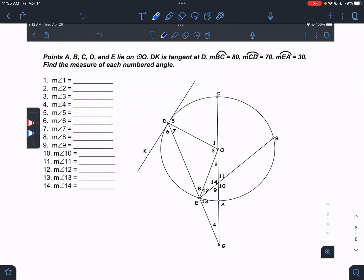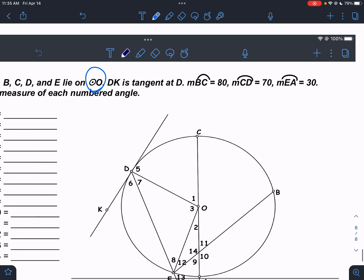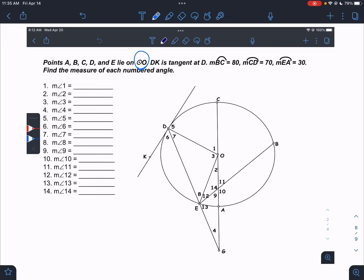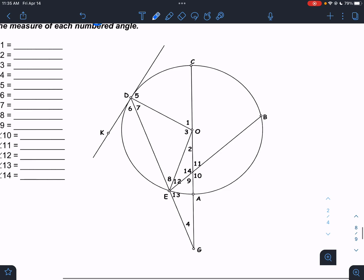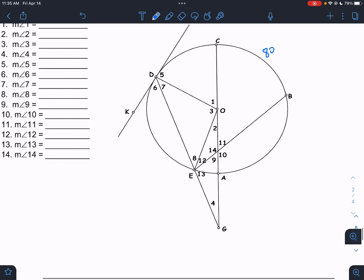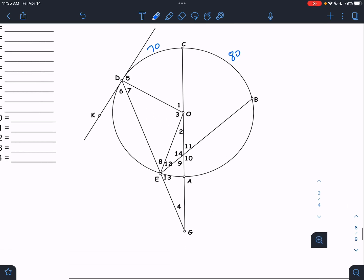It says that points A, B, C, and D lie on circle O. So we know that circle O, if it's called circle O, that we know O is the center. It says DK is tangent. We'll talk more about what that means later, but just so you know, tangent means it hits the circle once but does not go inside. So that is a tangent line, DK. The measure of arc BC is 80. Let's get these numbers in here. BC is 80. CD is 70. We know that EA is 30.